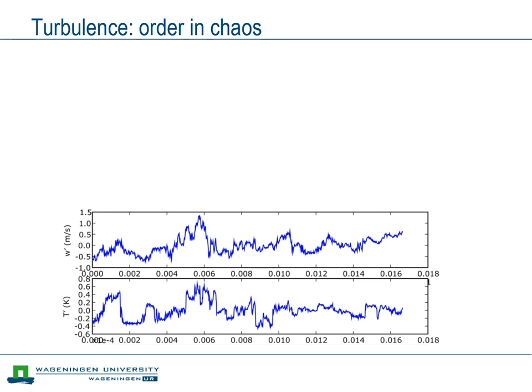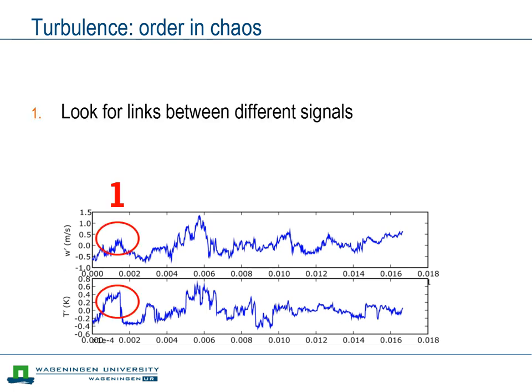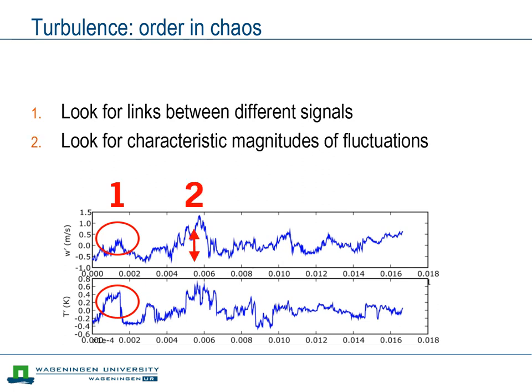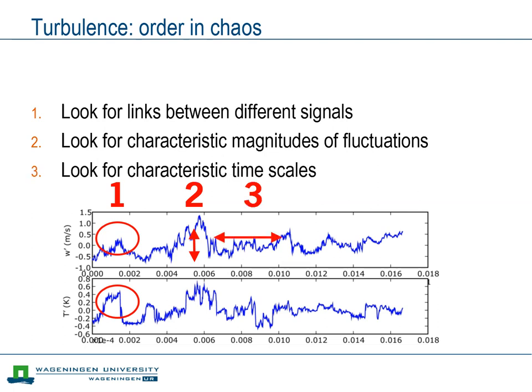For illustration, we show two time series: vertical wind speed at the top and temperature at the bottom. The first thing we can look for is to what extent different variables show similar behavior. Here we see, for instance, that in general upward motion — positive vertical wind speed — coincides with relatively warm air, positive temperature fluctuations. Hence, warm air is moved upward. A second characteristic to look for is the typical magnitude of the turbulence fluctuations, the amplitude. And finally, we see that the signal is not random noise — rather, we see some typical time scales of the fluctuations.